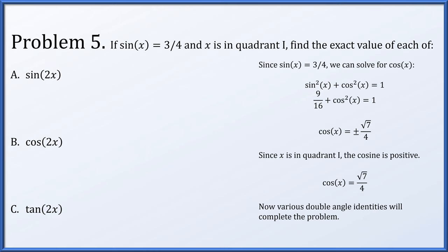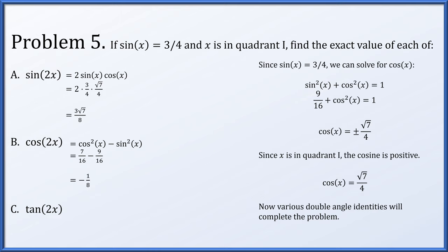Using the double angle identities: sine of 2x equals 2 sine x cos x. With sine x = 3/4 and cos x = √7/4, this simplifies to 3√7/8. Next, cos of 2x equals cos² x minus sin² x. Since cos x = √7/4, its square is 7/16, and since sin x = 3/4, its square is 9/16. So 7/16 minus 9/16 equals negative 2/16, or minus 1/8. Finally, tan of 2x equals sine of 2x over cos of 2x, which is (3√7/8) over (−1/8). The eighths cancel, giving negative 3√7.